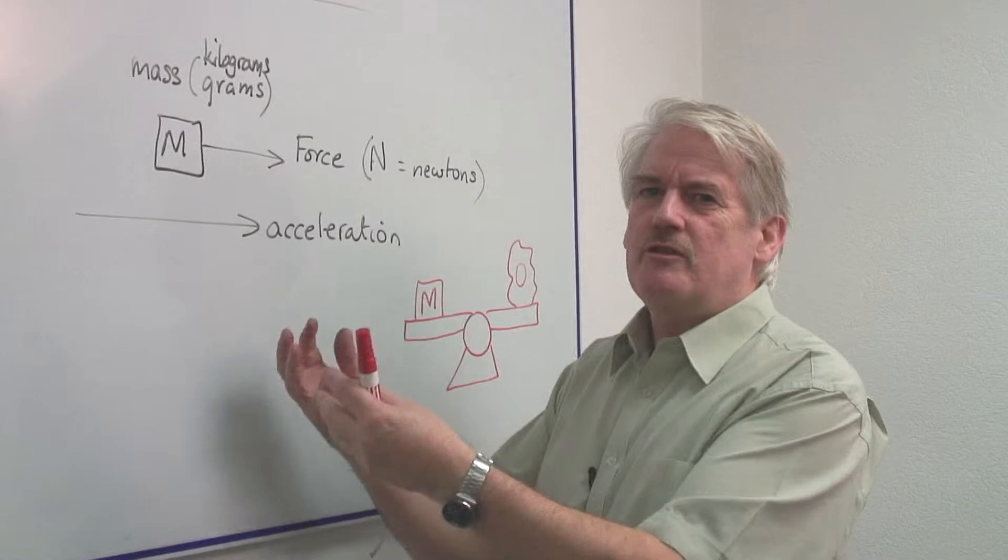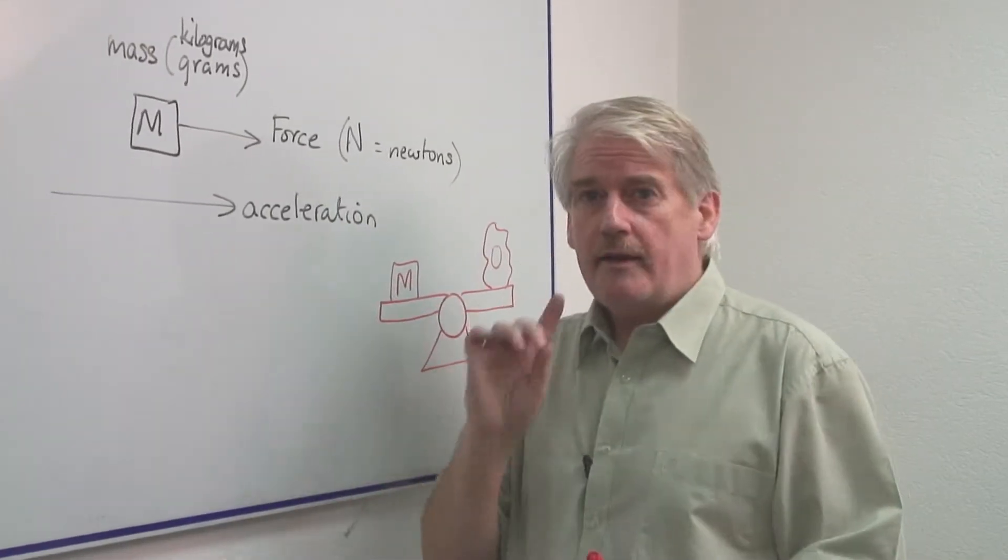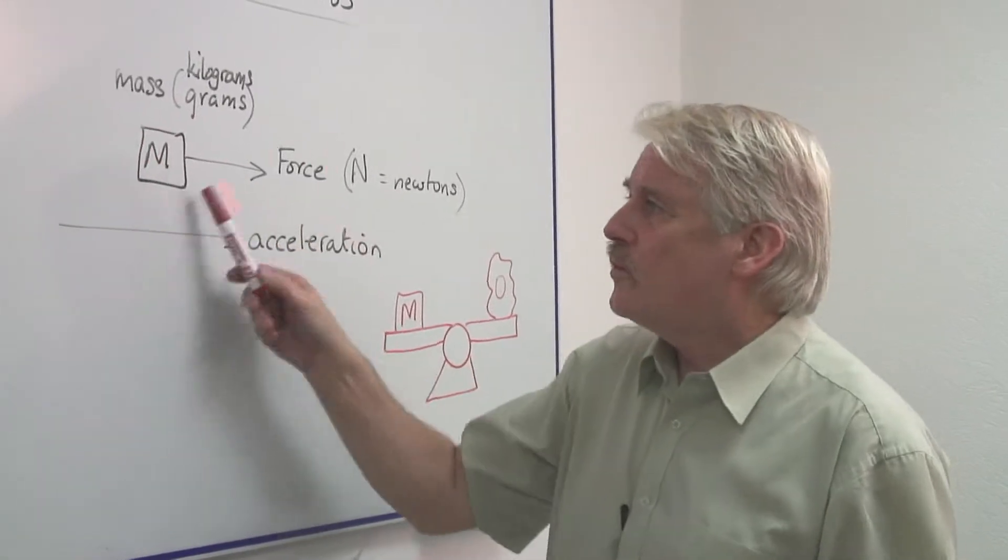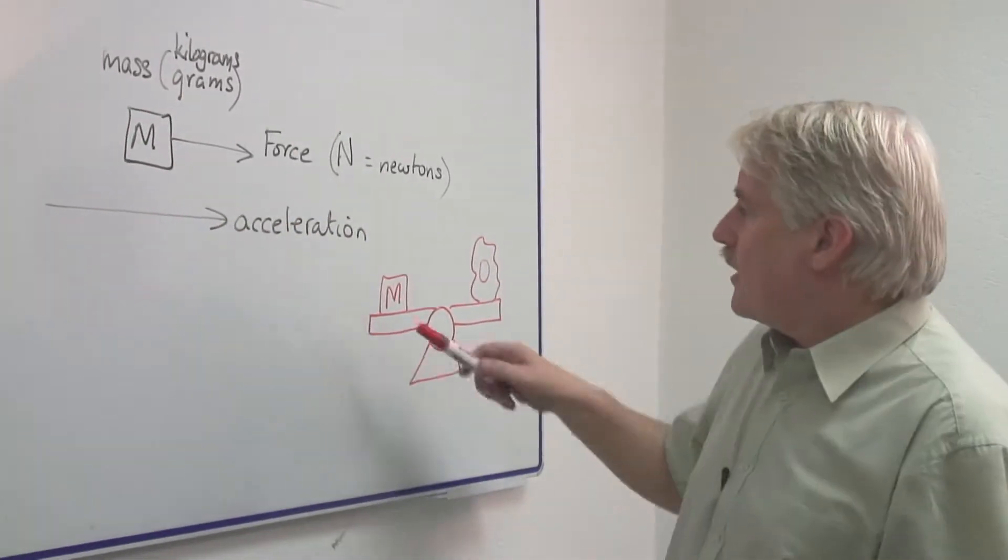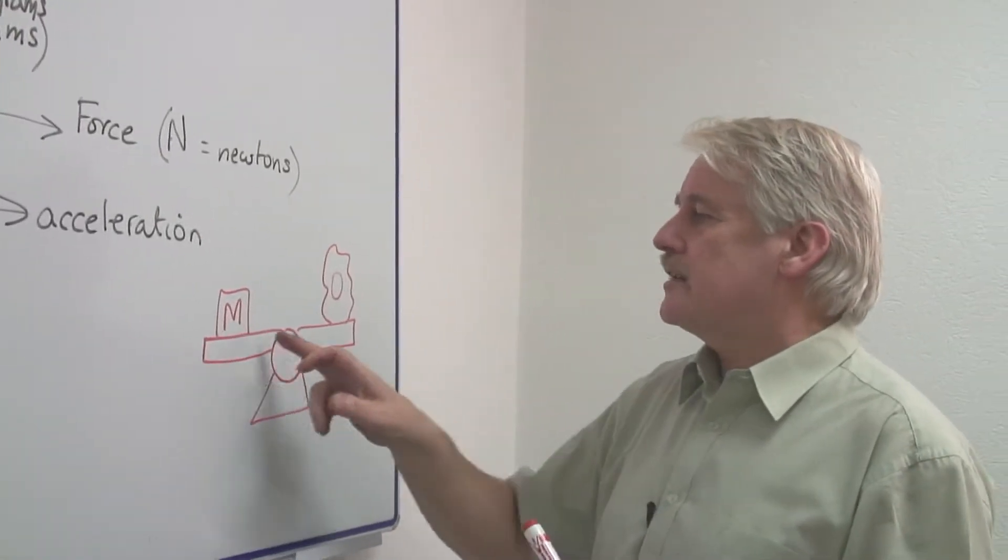Mass is the amount of stuff something is made of, kind of weight-wise. So we have to be very careful when we want to measure it. If we're measuring mass and figuring out mass, we must use a balance of this kind.